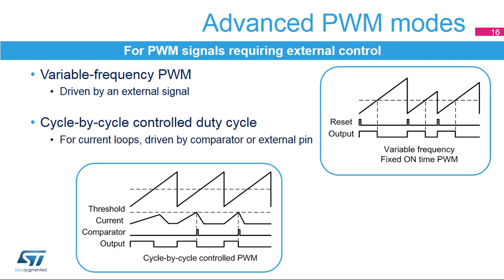In this case, a comparator monitors the peak current value into the load. As soon as the current exceeds a programmed threshold, the comparator resets the PWM output, which is then automatically restarted at the next PWM period, thus providing a controlled peak current value.